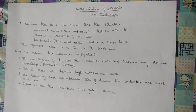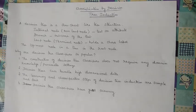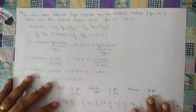The root node can be found by using attribute subset selection measures like information gain, Gini index, and gain ratio. In this particular video, I am going to talk about how to find out the root node by using information gain. Let's look at an example now.